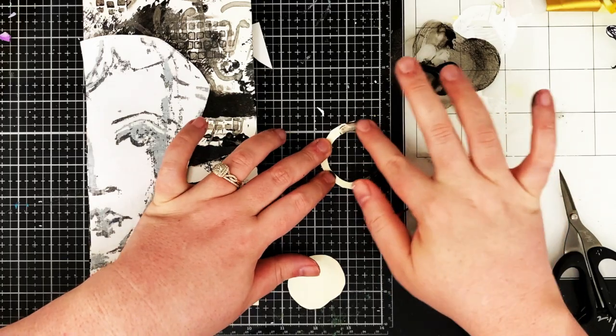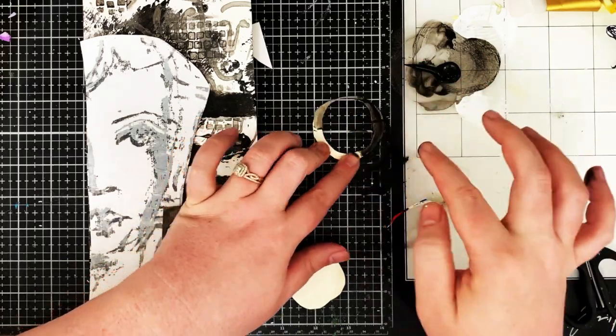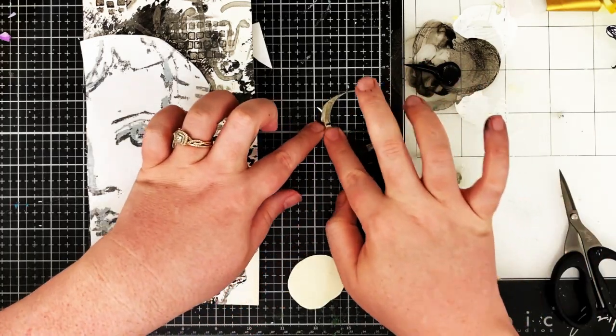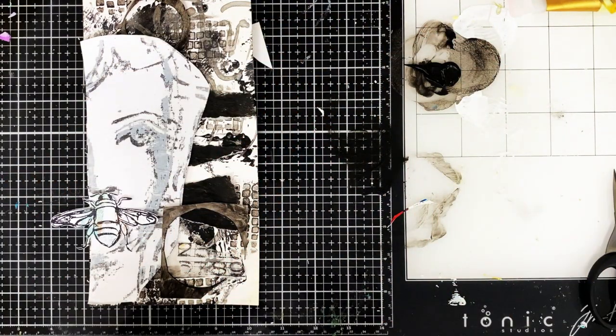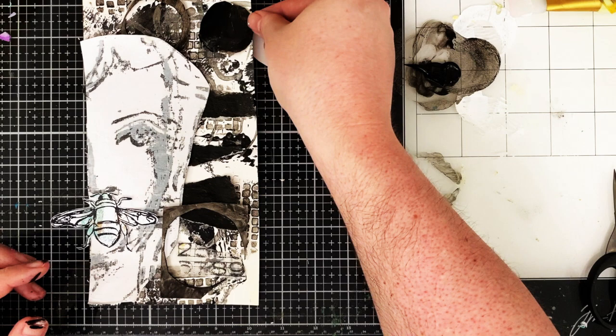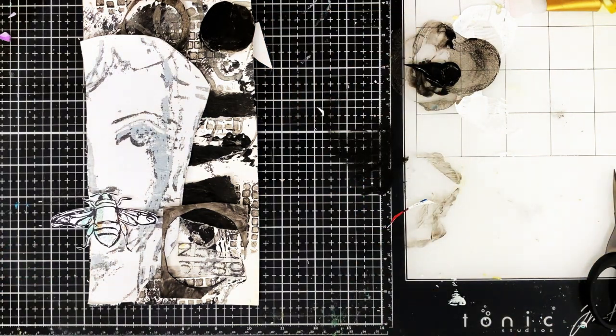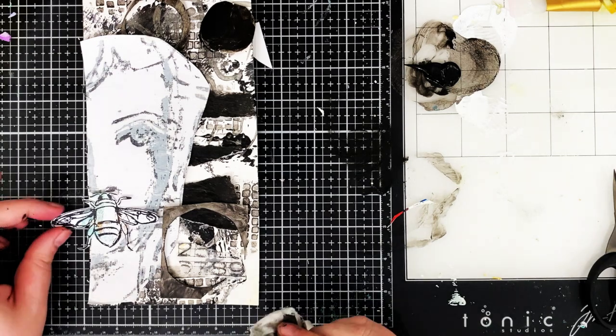Once I have that cut, I'm taking some more black paint and obviously as you can see here I am just using my finger to paint the circle black. So once I get everything figured out where I want it, through the magic of editing, I'm going to glue everything down right now.